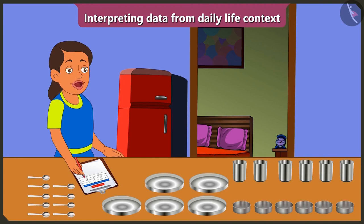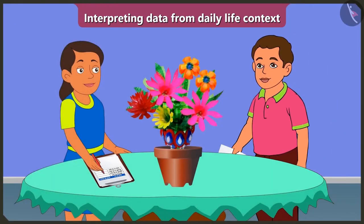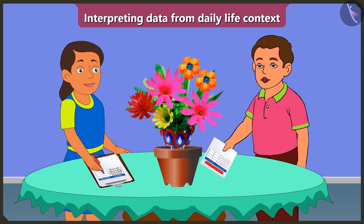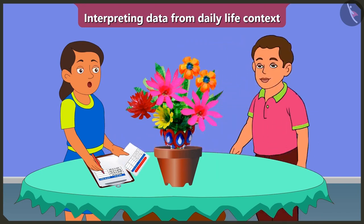Now let's see the second example. I will fill this table by counting how many and which color plastic flowers are there in this flower vase. Hey Bubbly, you don't need to count these flowers. Look, I have filled the data about the flowers which are in the flower vase. Thank you, Bunty. I will interpret the data from this table.